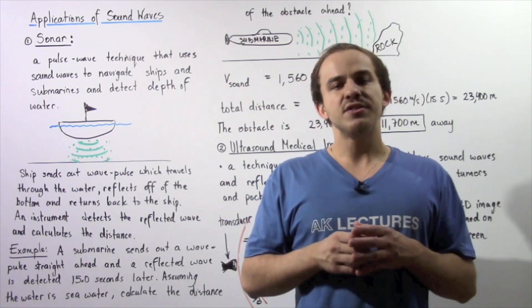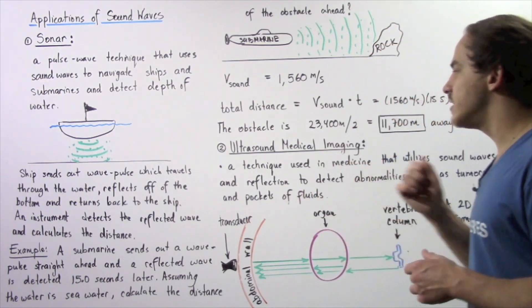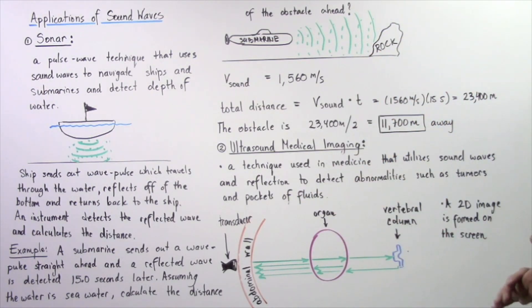Another application of ultrasound is to help us study the way that our organs function. For example, we can study the way that our heart is functioning. So how exactly does ultrasound medical imaging work?